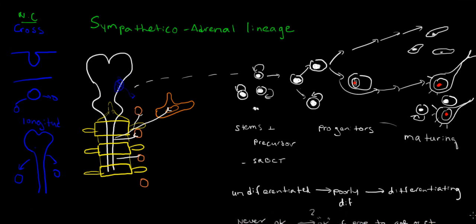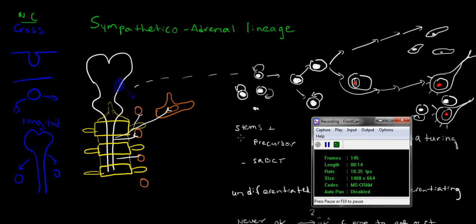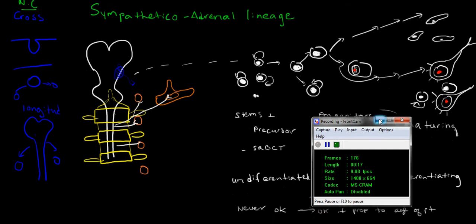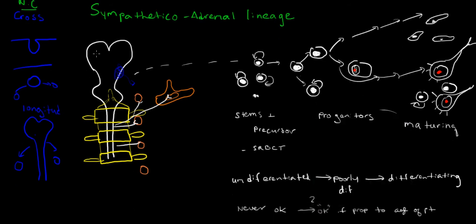Hello, this is the third installment in the neuroblastoma series. What we're going to discuss now is how the neuroblastoma is in essence a recapitulation of the biology of the sympathetico-adrenal lineage.